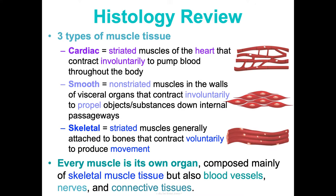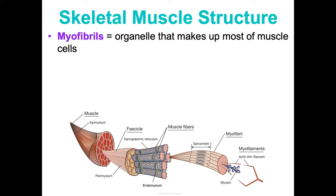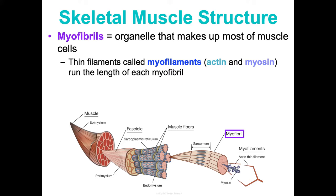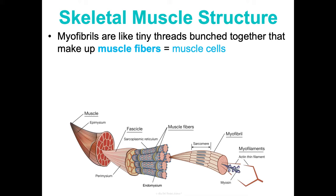Let's zoom in on skeletal muscles and talk about their structure more specifically. First, myofibrils — an organelle that makes up most of your muscle cells. They are composed of thin filaments called myofilaments, which are either actin myofilaments containing mainly the protein actin, or myosin, which are thicker filaments containing the protein myosin. These myofilaments run the length of each myofibril. If we subdivide a myofibril lengthwise, those sections are called sarcomeres — the contractile unit of the muscle.